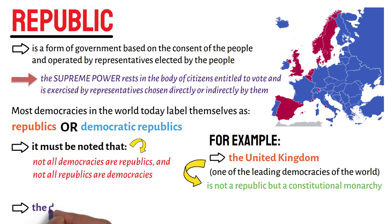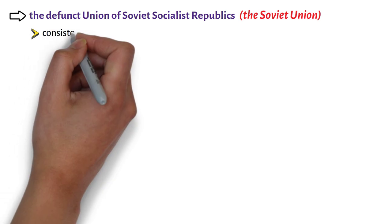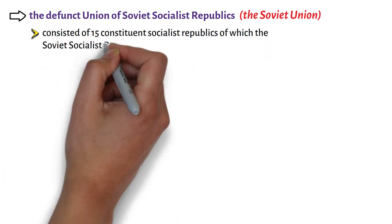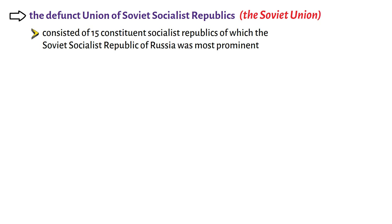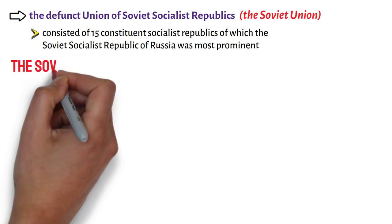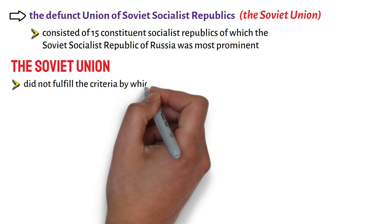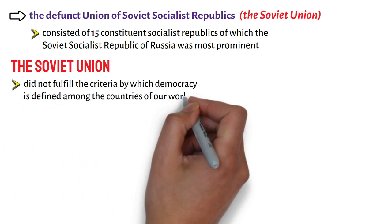On the other hand, the defunct Union of Soviet Socialist Republics, or simply the Soviet Union, consisted of 15 constituent Socialist Republics of which the Soviet Socialist Republic of Russia was most prominent. However, the Soviet Union did not fulfill the criteria by which democracy is defined among the countries of our world.